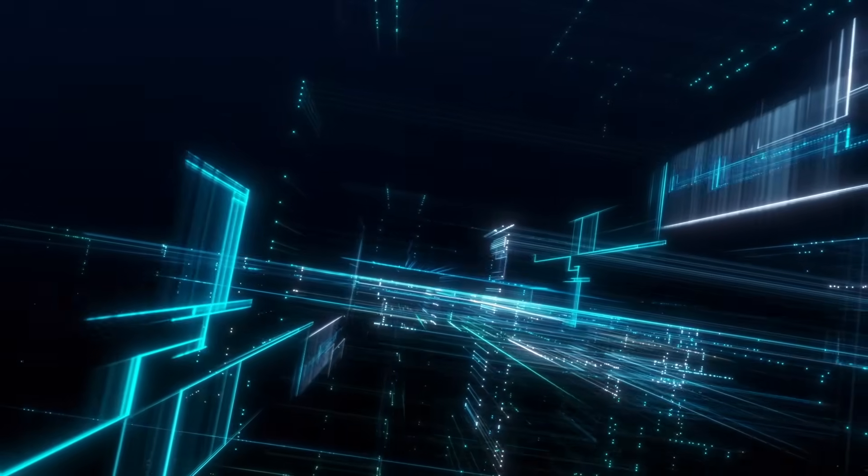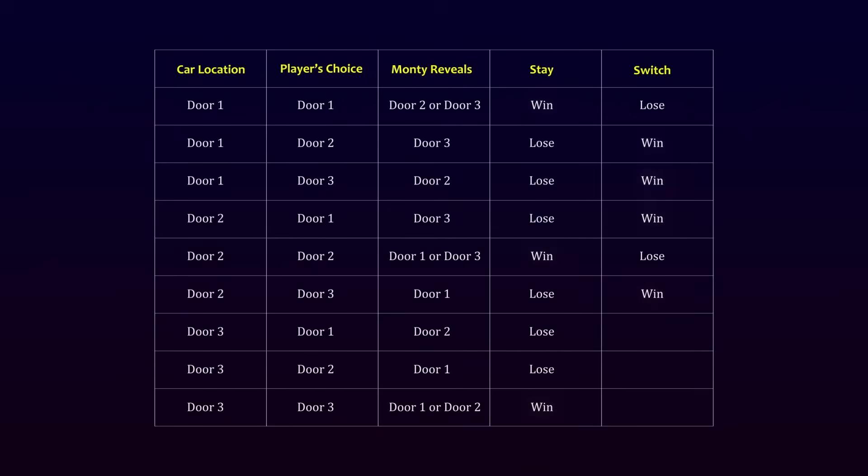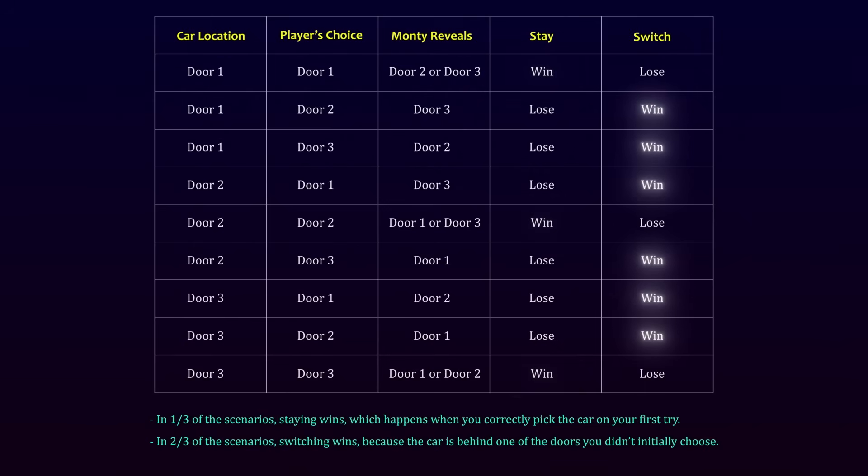Another way to explain the Monty Hall problem is by breaking it down step-by-step through all possible scenarios. This method, called exhaustive search, lays out every possible outcome to make the solution crystal clear. When you chart out all the possibilities, a clear pattern emerges. In one of three of the scenarios, staying wins, which happens when you correctly pick the car on your first try. In two out of three of the scenarios, switching wins, because the car is behind one of the doors you didn't initially choose. This table is about as straightforward as it gets. It leaves no room for debate. Switching is the better option.